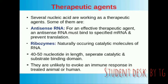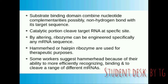Next is Ribozyme. We know that naturally occurring Ribozymes are catalytic molecules. In this RNA, 40 to 50 nucleotides form a separate catalytic substrate binding domain present in the Ribozyme. When the substrate binding domain combines with the target sequence via nucleotide binding, Ribozyme is a catalytic portion which helps us to cleave our target RNA.